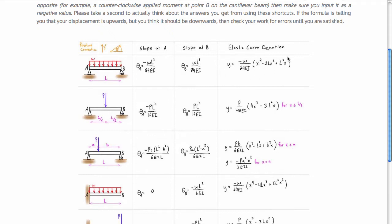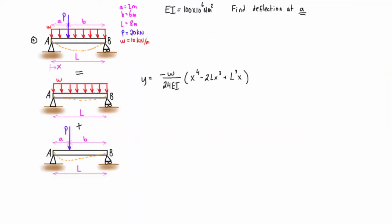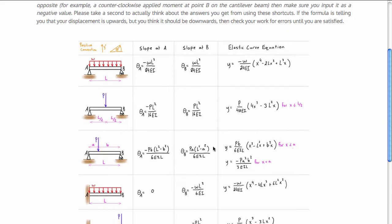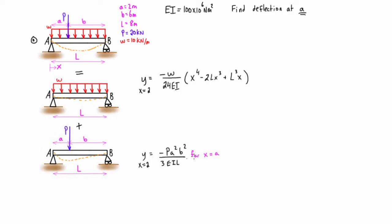So what we want to do is we want to grab this elastic curve equation and drop it in here for the distributed load and then come back here and we're going to grab the elastic curve equation for the point load here. But because the question asked for us to find the deflection at little a, then we're going to be grabbing this one right here just like that.